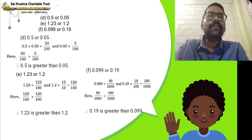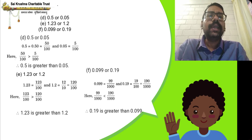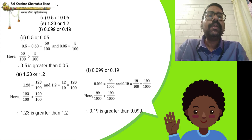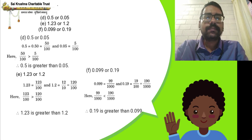Which is greater, 1.23 or 1.2? Comparing the whole number part: both have 1, same. Comparing the tenths part: both have 2, same. Writing 1.2 as 1.20, we compare the hundredths part: 1.23 has 3 and 1.20 has 0. Since 3 is greater than 0, therefore 1.23 is greater than 1.2.